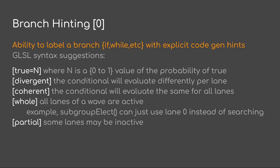Divergent would mean the conditional will evaluate differently per lane, or possibly evaluate differently per lane. Coherent would mean the conditional will always evaluate to the same value for all lanes, meaning it doesn't necessarily have to be done in the vector unit. Whole would mean all lanes of the wave are active for the if, while, etc. — for example, subgroup_elect can then just use lane 0 instead of actually searching for the first lane. Partial would mean some lanes may be inactive.